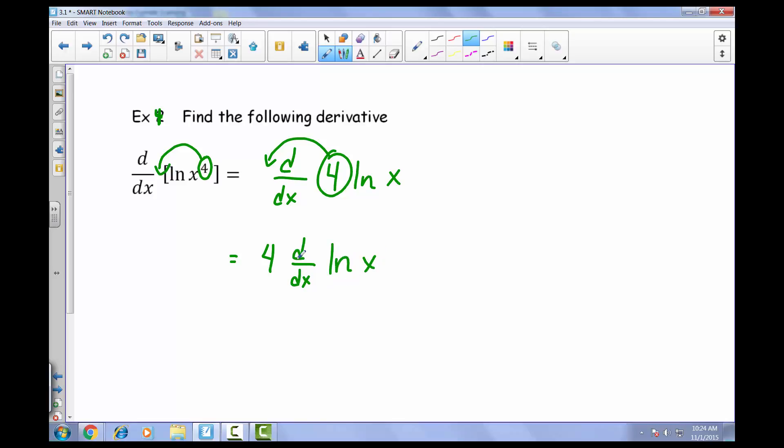And we know that from our properties with derivatives of logs and natural logs, that this would just come out to be 1 over x. So really we have 4 times 1 over x. And so ultimately it looks like our final simplified version just comes out to be 4 divided by x.